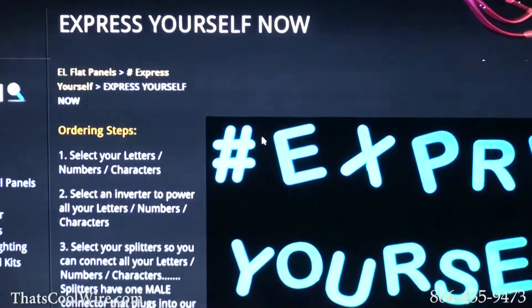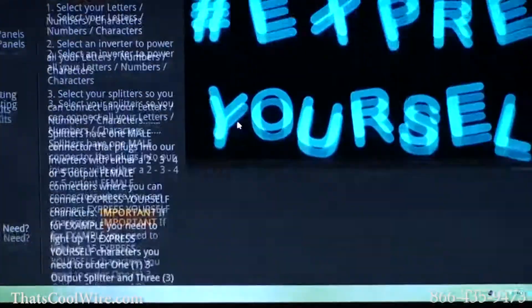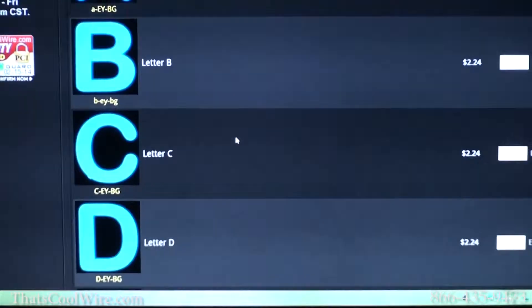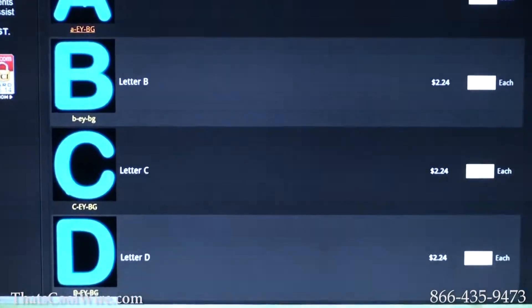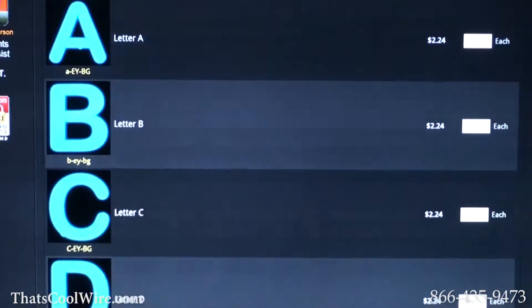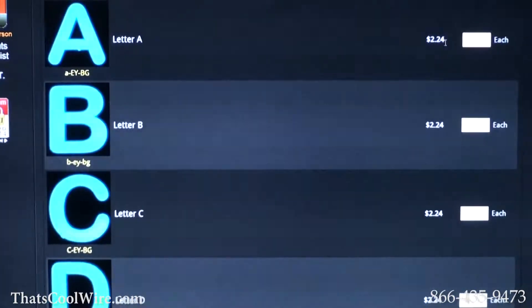On this page what you're going to see is all of our letters and characters and numbers. So here you can kind of build if you're going to use letters, characters, or numbers. For example, if you need like three A's, you would just go over to the right side and enter a three right in this box right here. But let's scroll down to where the splitters are.